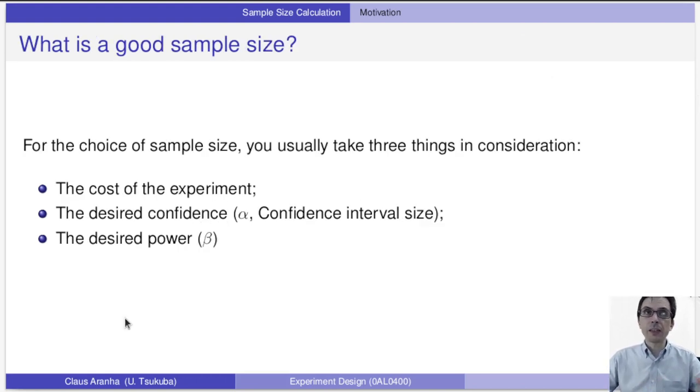For the choice of sample size, we take three things into consideration. The cost of the experiment, the desired confidence α, the confidence of the interval size, and the desired power. We have talked a lot about confidence so far, but not so much about power. Today, we're going to talk a little bit more about power.